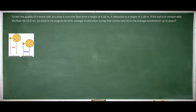If you haven't yet done so, please pause the video to read or reread the question. In this question, we are asked to calculate the average acceleration of a falling tennis ball. From the definition of average acceleration, we know that we're going to need the final velocity, the initial velocity, and the time interval during which the tennis ball is in contact with the ground.